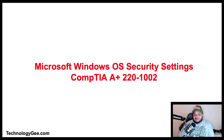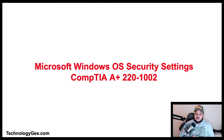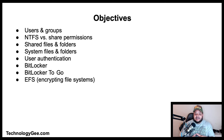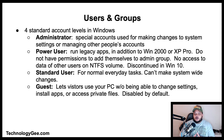What up everybody, this is your boy Tech G back with another video to help you successfully pass the CompTIA A+ 220-1002 examination. In this video you're going to learn about Microsoft Windows operating system security settings such as users and groups, NTFS versus share permissions, shared files and folders, system files and folders, user authentication, BitLocker, BitLocker to Go, and EFS or Encrypted File Systems.